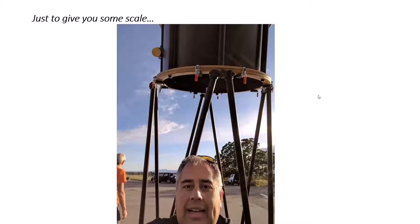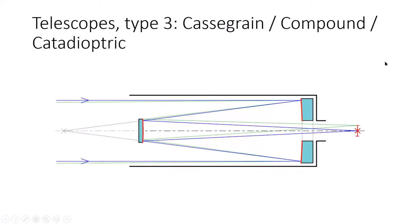You need a ladder to look through that baby because the focuser is way up high — there's my short self for scale. The third type of telescope is the compound, also known as the Cassegrain or catadioptric scope.